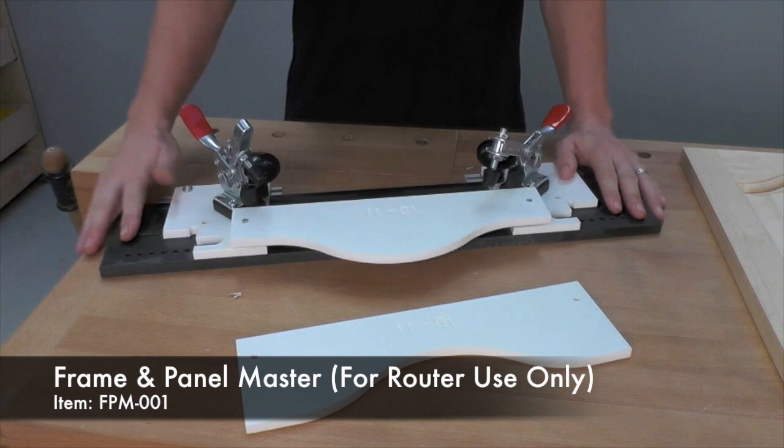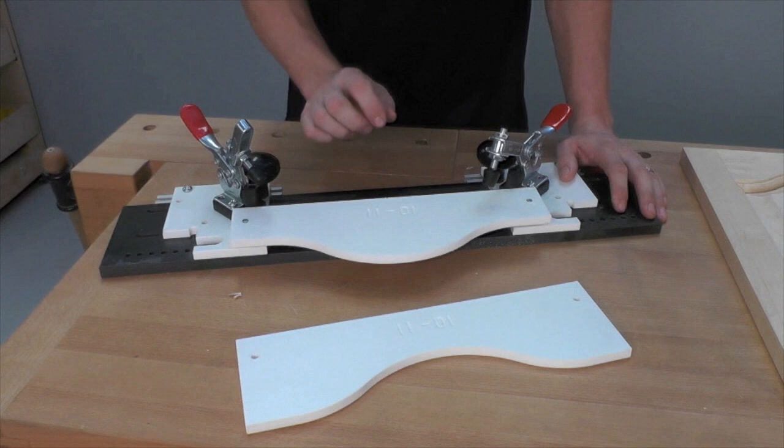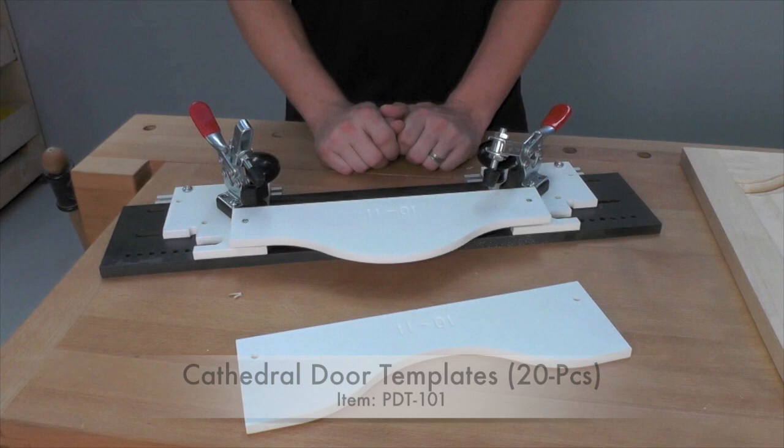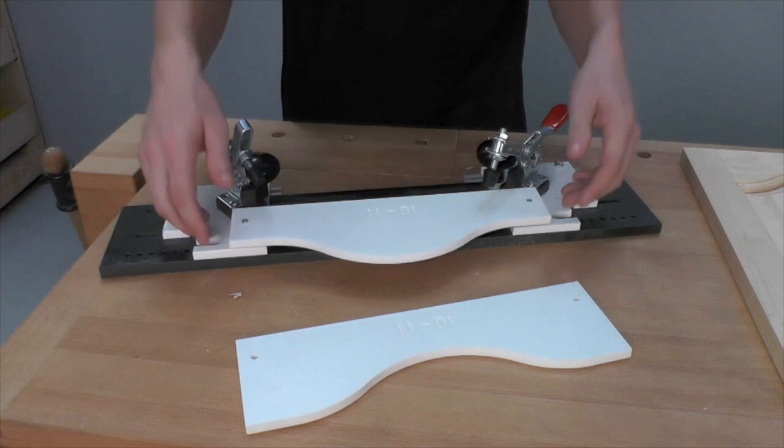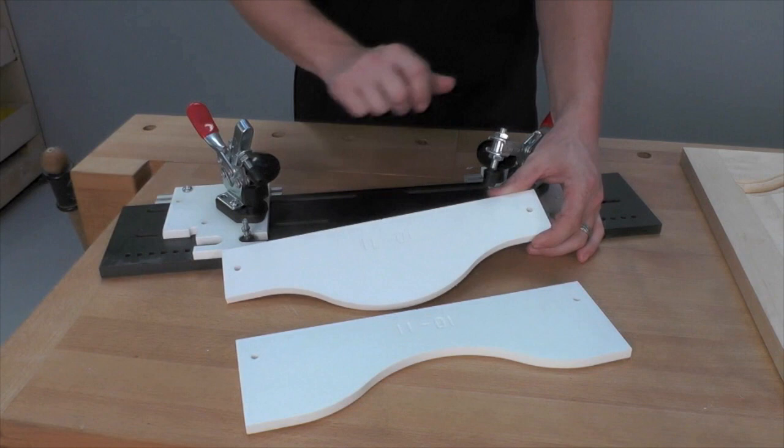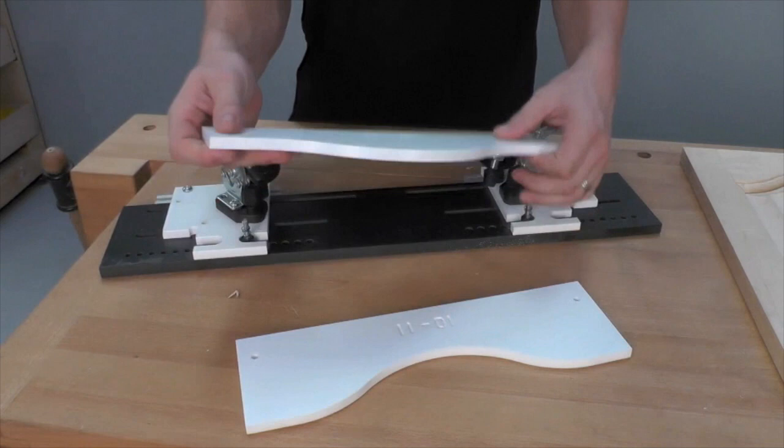This is the standard frame and panel master and it consists of one jig that will make both the panel portion and the top rail portion of your door. You also have a choice of a set of templates either for arch tops or cathedral tops. Each set of templates comes with all the templates necessary to make doors ranging from roughly 8 inches wide all the way up to 22 inches wide, so you can make doors to fit almost any application.